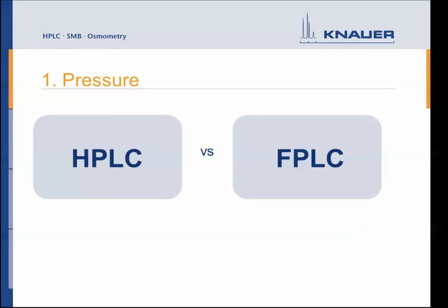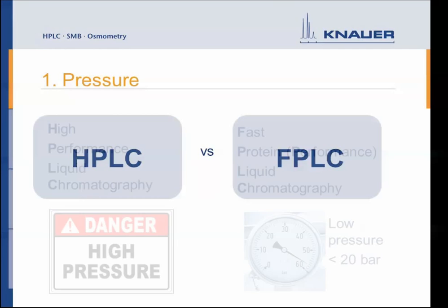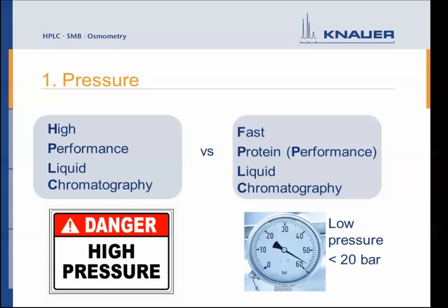The first and biggest difference between HPLC and FPLC is already given in the name. HPLC means high performance liquid chromatography — some people also refer to it as high pressure liquid chromatography — so here you usually work with very high pressure. In comparison, FPLC, which stands for fast protein or fast performance liquid chromatography, usually only works with lower pressure, typically below 20 bar depending on your sample.